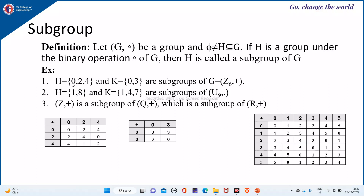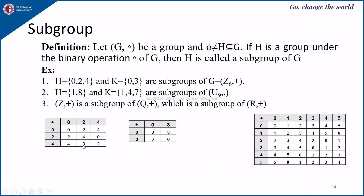Consider the table for {0, 2, 4} with modulo 6: 0+0=0, 0+2=2, 0+4=4, 2+0=2, 2+2=4, 2+4=6 mod 6=0, 4+0=4, 4+2=6 mod 6=0, 4+4=8 mod 6=2. You can observe that the subset {0, 2, 4} satisfies all the properties of a group.